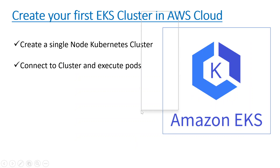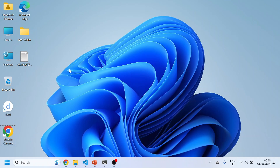Hello everyone, this is Bhupesh again, welcome to my channel. Today we'll be doing a new topic: how to create an EKS cluster on Amazon cloud. Sometimes we need to create clusters on Amazon or Azure cloud, so let's do it with practical implementation. We'll be creating a single node Kubernetes cluster on Amazon cloud, connecting to it, and executing pods. If you haven't watched my earlier video on how to create an Amazon cloud free tier account, you can go and watch it.